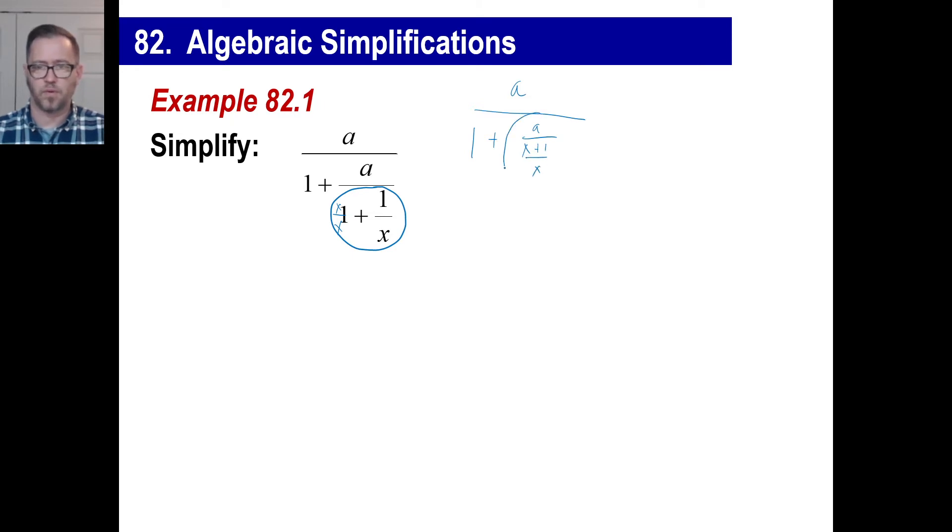And of course, this is where we have our division problem. And this, when we divide A divided by x plus 1 over x, we flip this part and we multiply. So that gives us, again, we have an A and 1 plus, we have of course A over 1, we can call it, and then times x over x plus 1. That'll give us Ax here and x plus 1.